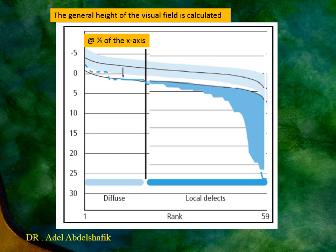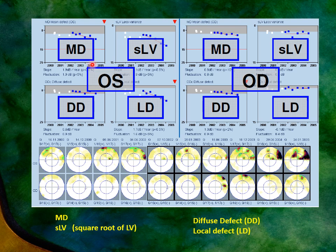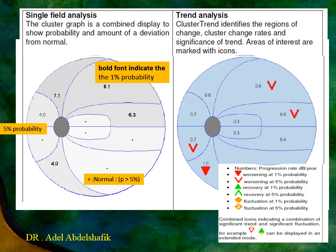In the new software of the Octopus there is diffuse defect and localized defect. Diffuse defect is the value of the patient recorded in the first one quarter of the field compared with normal, while localized defect is the rest compared to normal. These values are recorded each time and a regression line can be shown. So in the Octopus you now have a regression line for mean deviation, for square root loss variance, and for diffuse defect or localized defect.